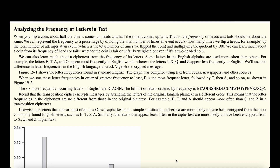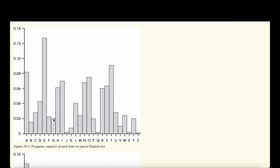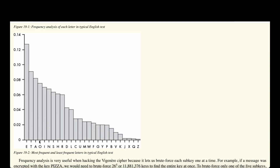If we look at English words, we can identify certain letters that occur more frequently than others. The letters E, T, A, and O appear most frequently in English words, while letters such as J, X, Q, and Z appear less frequently. Looking at a chart of the alphabet by occurrence in English, we can see that E occurs most often, followed by T and A.